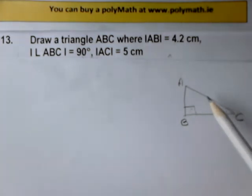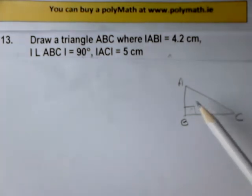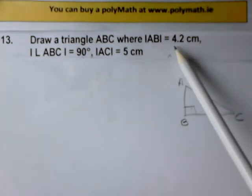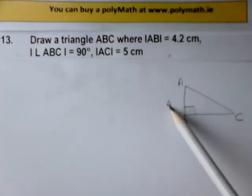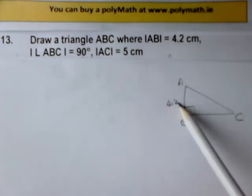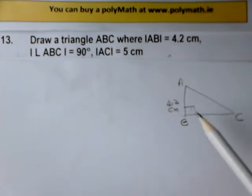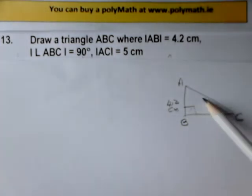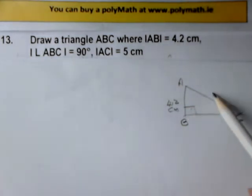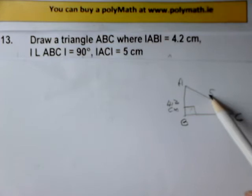So that's the triangle ABC. Now I'll put in the other measurements: AB is 4.2 centimeters, and AC, which is the hypotenuse because it's opposite the right angle — if you come out from the right angle you'll hit the hypotenuse — so that's 5 centimeters.